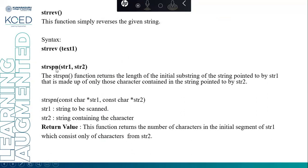The next function is strspn, which takes string 1 and string 2. The strspn function returns the length of the initial substring of the string pointed by str1 that is made up of only the characters contained in the string pointed by str2. You check str2 and find how many characters of the initial substring of str1 match.